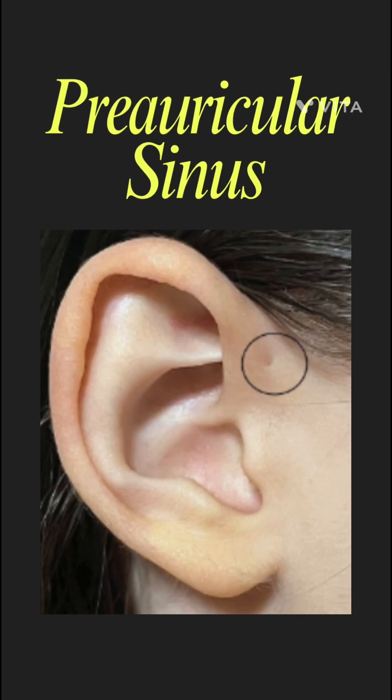Preauricular sinus was first described by Van Husinger in 1864. It is a benign congenital malformation of the preauricular soft tissue, also termed as preauricular pit, preauricular tract, or preauricular cyst.